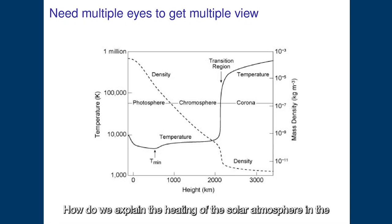This behavior of the temperature is not fully understood and is one of the major puzzles in solar physics. How do we explain the heating of the solar atmosphere in the chromosphere and in the corona? So this will be, of course, covered in some of the other lectures.